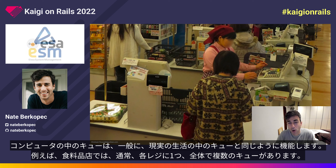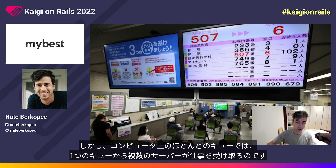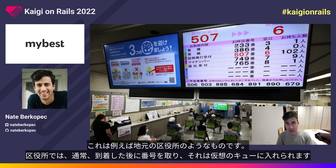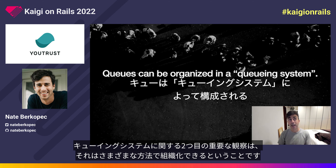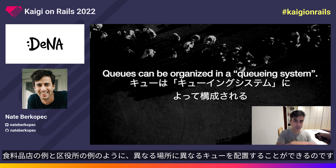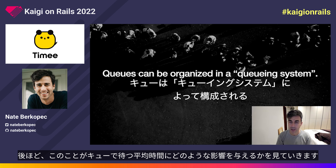Queues in computers generally work just like queues in real life. At the grocery store, there are usually multiple queues with one queue for each register. However, in most queues on computers, we have multiple servers pulling from a single queue. This is more like your local ward office or city hall, where you take a number after you arrive, that number is placed in a virtual queue, and multiple clerks can pull from this queue. Our second critical observation: queuing systems can be organized in different ways, and we'll learn how this affects the average time spent waiting.